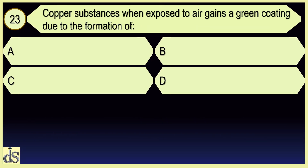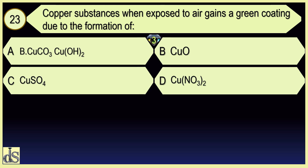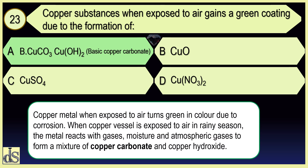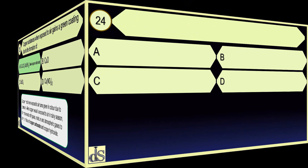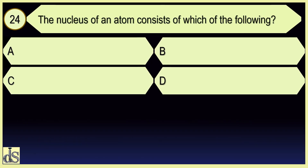Copper substances when exposed to air gain a green coating due to the formation of CuCO3·Cu(OH)2.